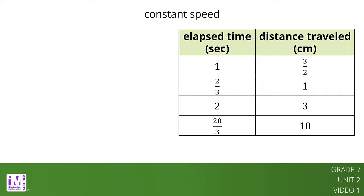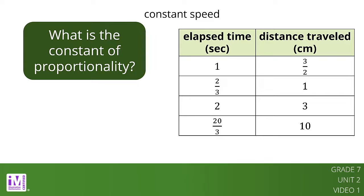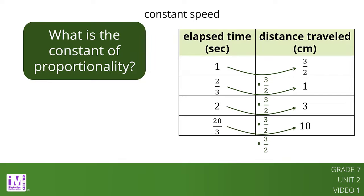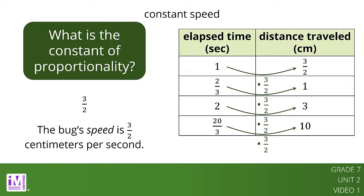This table represents the same situation except the columns are switched. Now, the elapsed time is in the first column and the distance traveled is in the second column. What is the constant of proportionality when we look at the relationship this way? We can multiply any number in the first column by three-halves to get the corresponding number in the second column. We can say that the distance traveled is proportional to the elapsed time and the constant of proportionality is three-halves. This means that the bug's speed is three-halves centimeters per second.